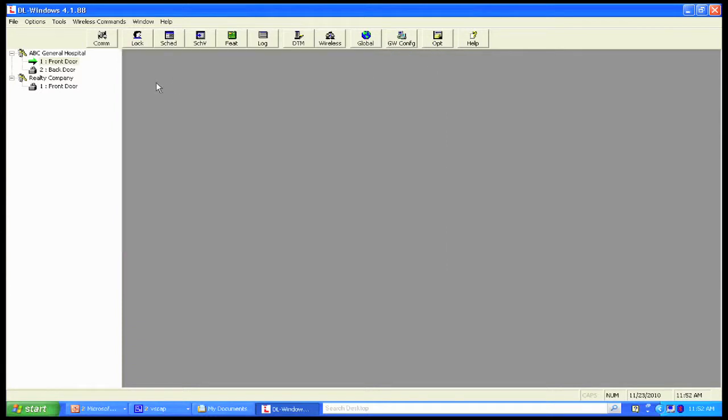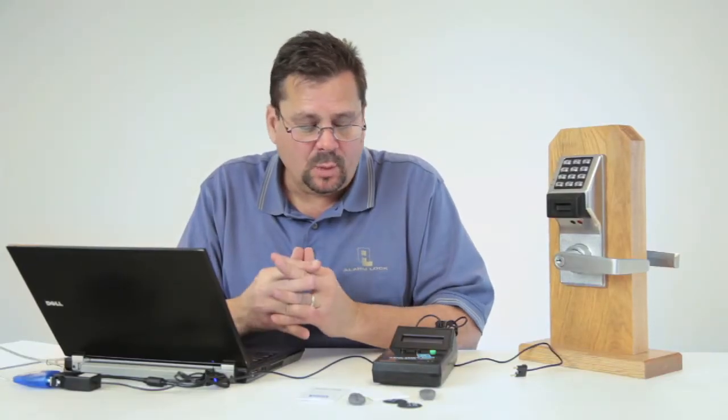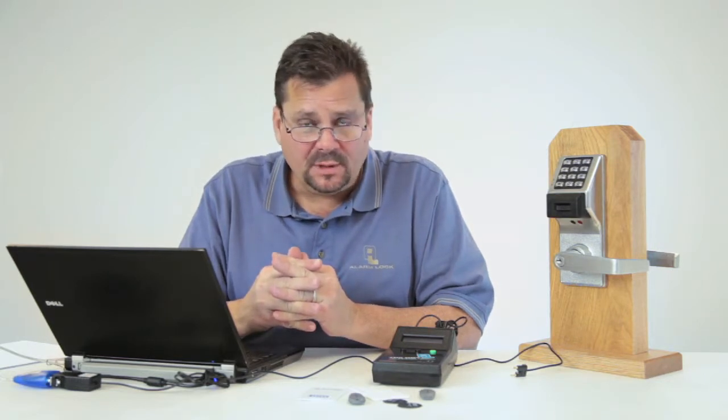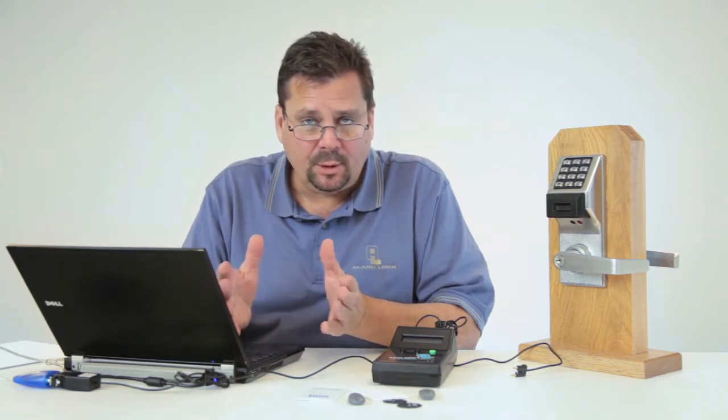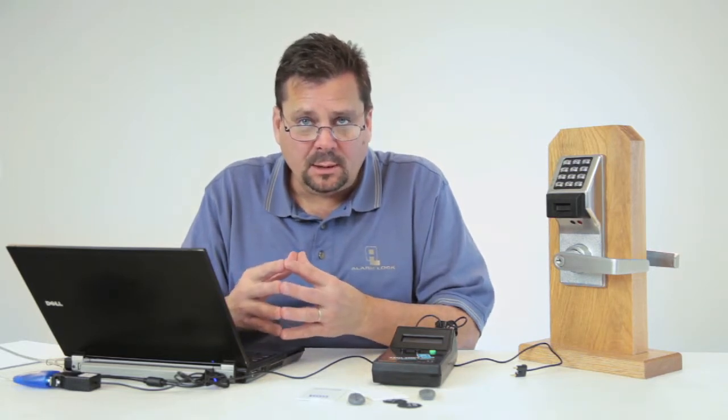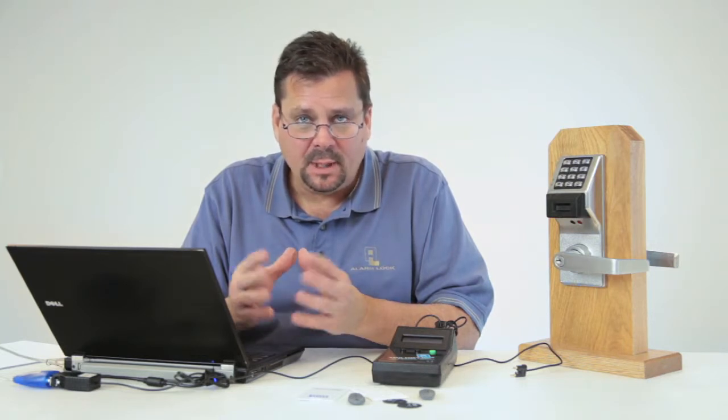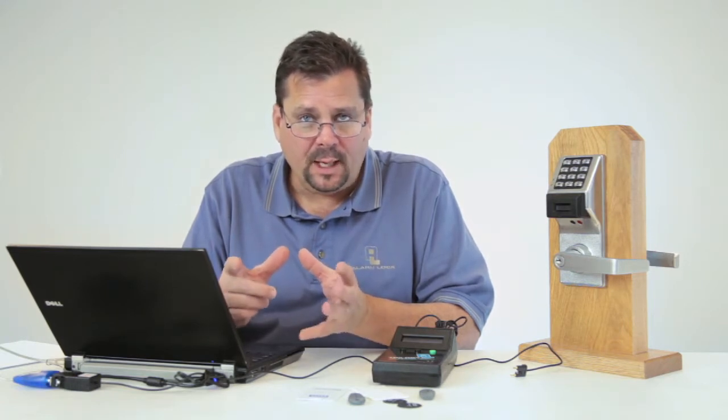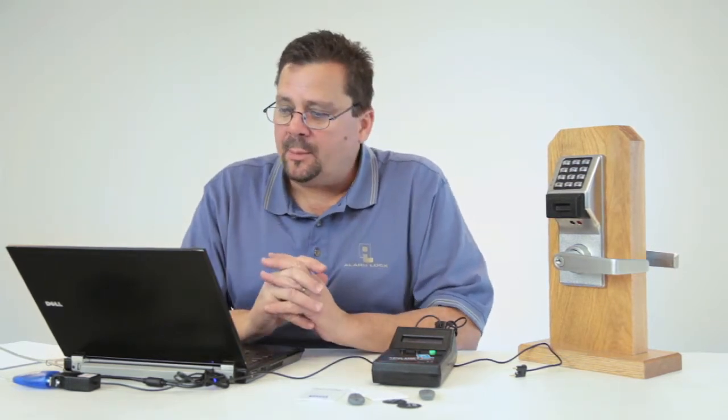From here, we're going to jump back into our software and utilize the Data Transfer Module, DTM for short. We have a DTM 3 as our most current version. If you have a DTM 2 and you've upgraded to 4.1.88, which is on the web currently, contact Alarm Lock Customer Service and request an SE-DTM chip. We're going to give you a firmware chip to upgrade the DTM 2 and turn it into a 3. It's free of charge. Let's show you how to operate the DTM.